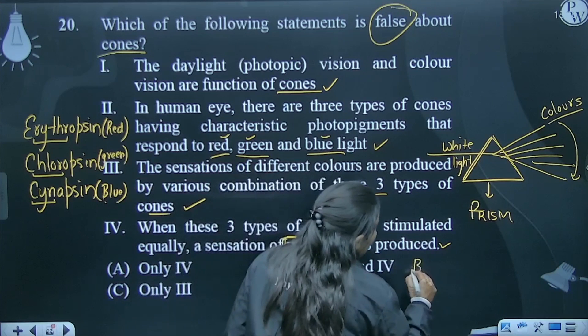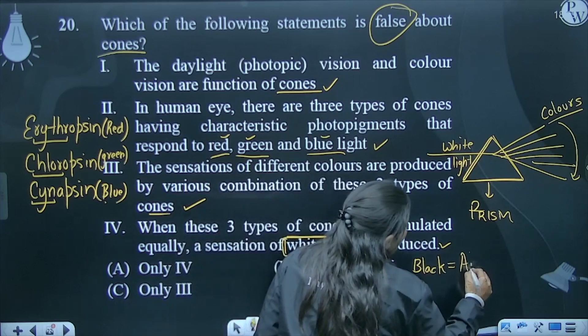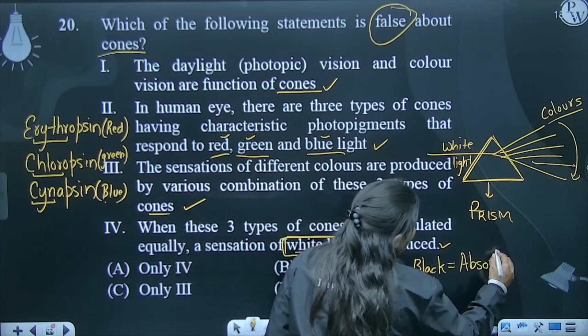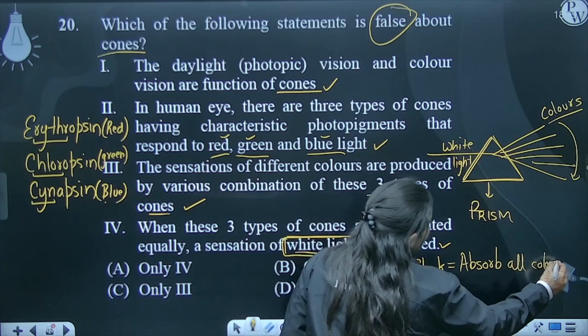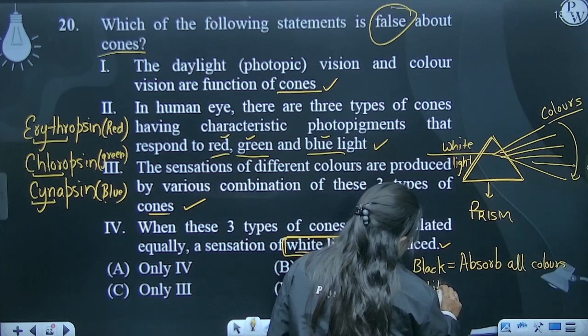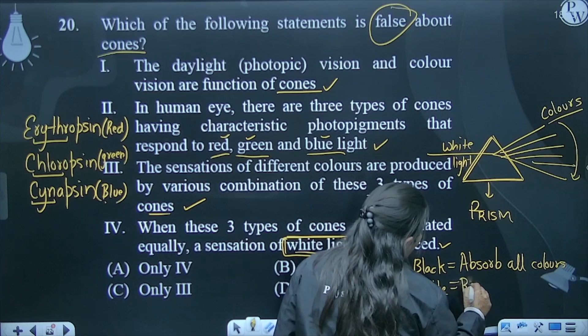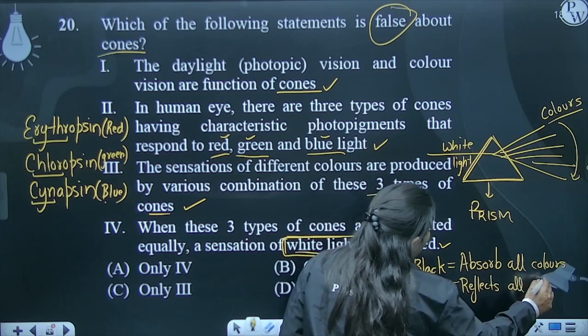Black absorbs all colors. This is why black color produces heat. White reflects all colors.